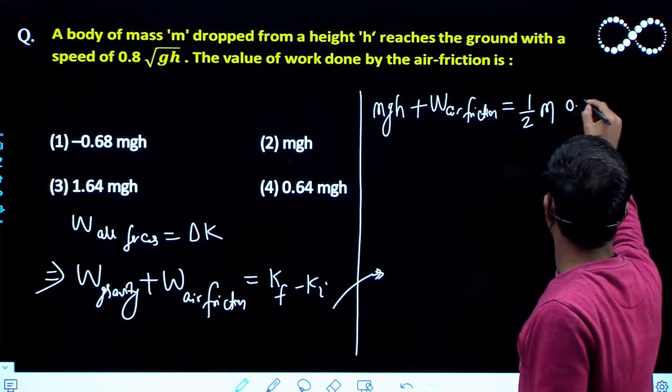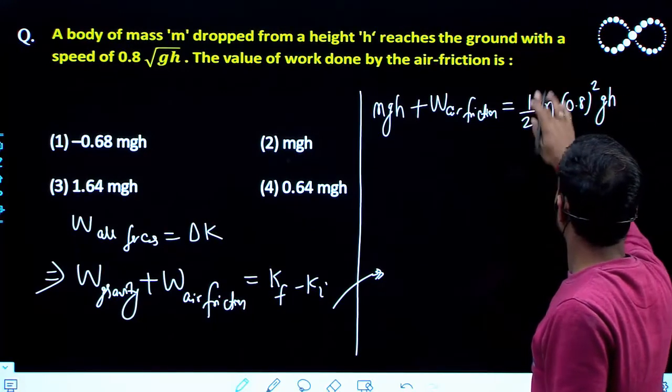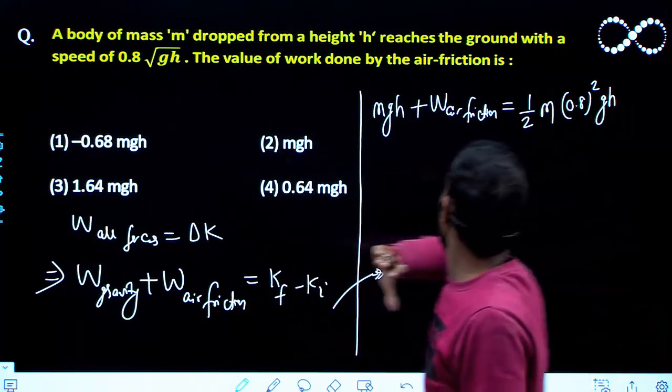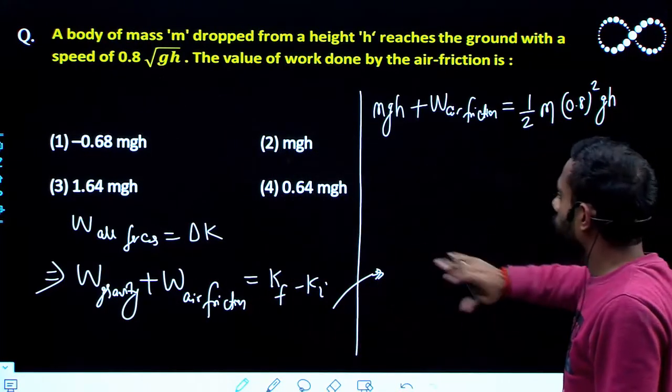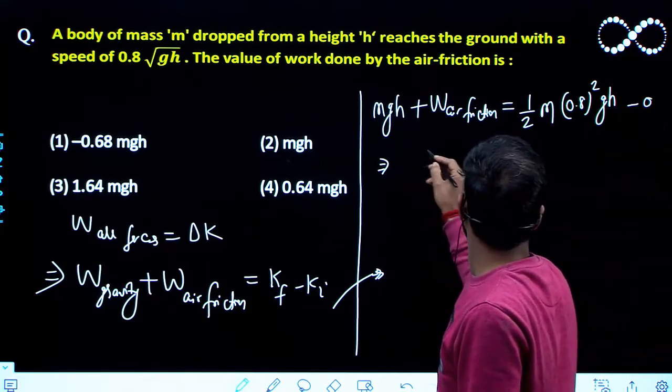So I will say 1/2 m v², that will be 0.8² and gh, that is 1/2 m v². Final speed is given as this, so square of this. And initially it was at rest, so this will be 0 here.